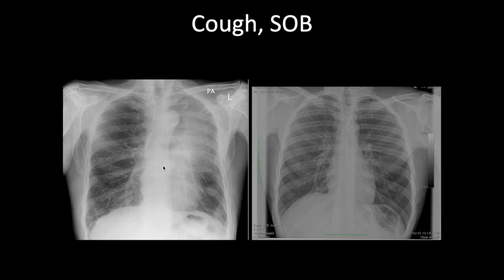This is left upper lobe collapse. When the left upper lobe collapses, it collapses onto the left heart border. There is airspace opacification with no air and no lung markings — it obscures the left heart border, confirming it is in the upper lobe. The trachea is pulled slightly to that side, the aortic arch is pointing toward the left side rather than being straight up, and the left hemithorax looks smaller than the right. This is collapse of the left upper lobe.